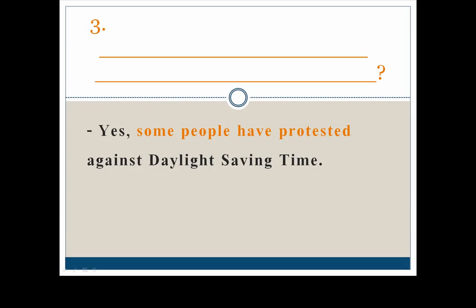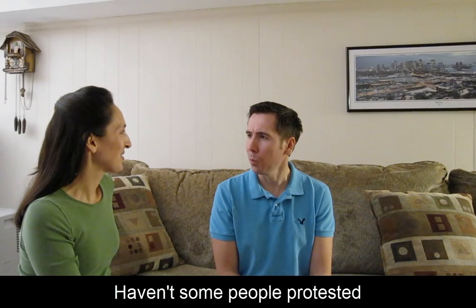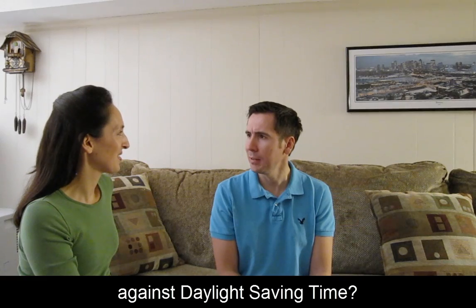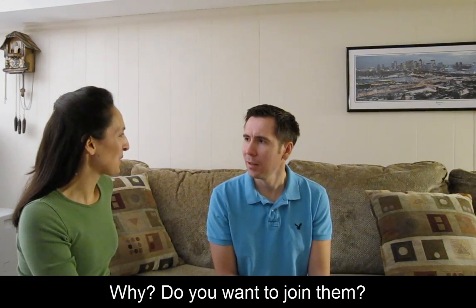Number 3. Again, use the answer and especially those words in orange to help you form the negative question. The question: 'Haven't some people protested against daylight saving time?' Now listen and you'll hear this question used in conversation. 'Haven't some people protested against daylight saving time?' 'Protested? Yeah, I think they have.' 'Why? Do you want to join them?' 'Yes, I do.'